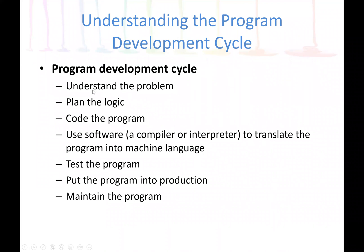The first step is we need to understand the problem. Understanding the problem means we have to know the objective of the program or the software. Anytime we are involved in a software development project, we must have a reason. The main goal, most likely, is to solve a problem using the software. So we need to understand the problem. If it's for entertainment, we still have to know the objective, how the game is going to be played, or the players involved.